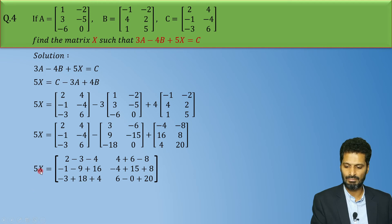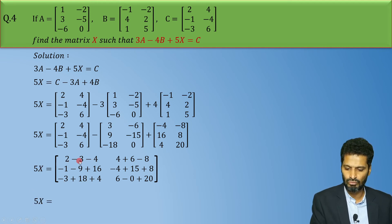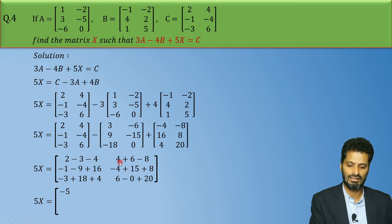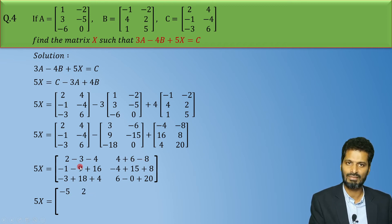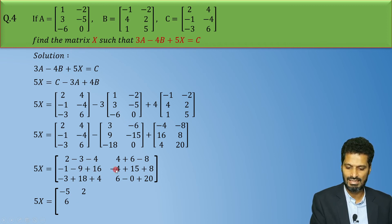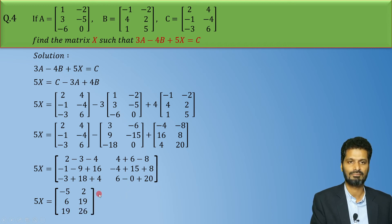Simplifying: 5X equals the matrix. First element 2 minus 3 minus 4 gives minus 5. Then 4 plus 6 is 10, minus 8 gives 2. Minus 1 minus 9 is minus 10, plus 16 gives plus 6. Similarly, the next row totals give 19, 19, and 26.